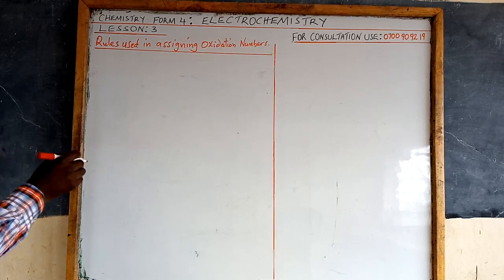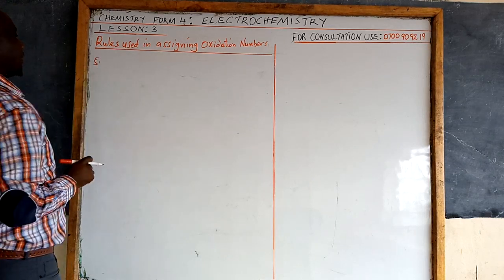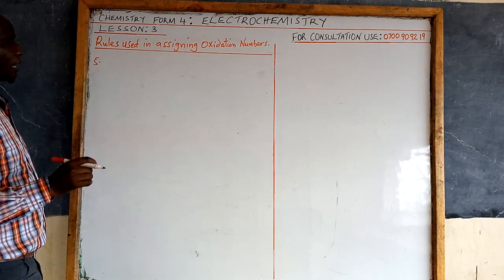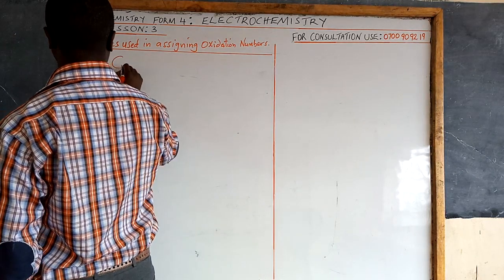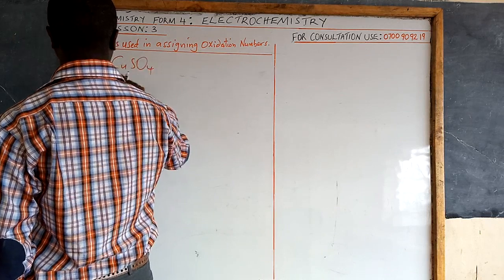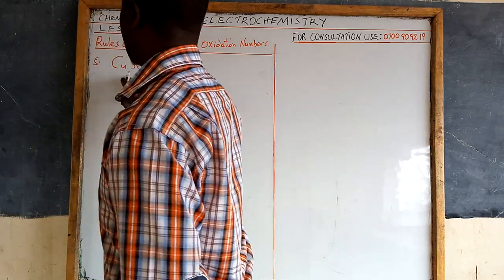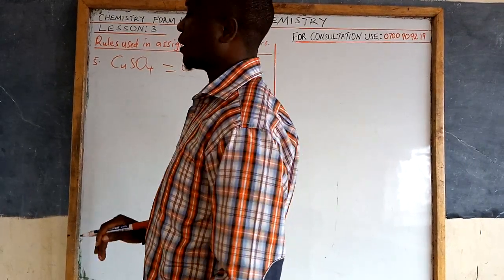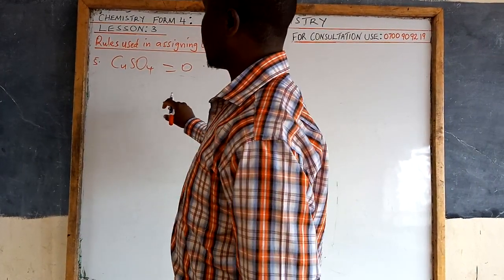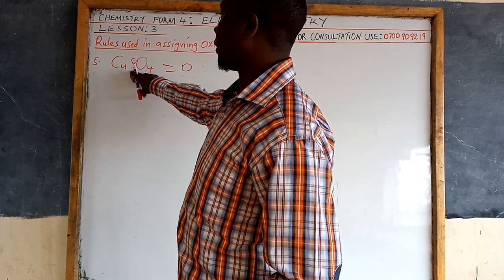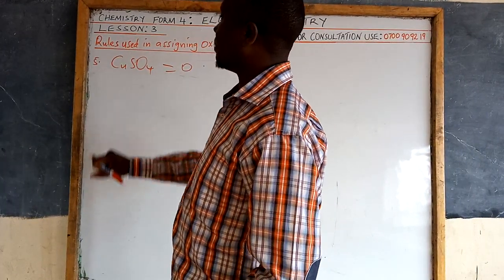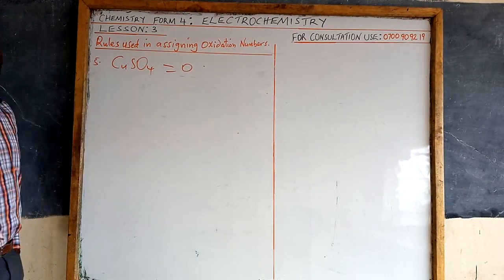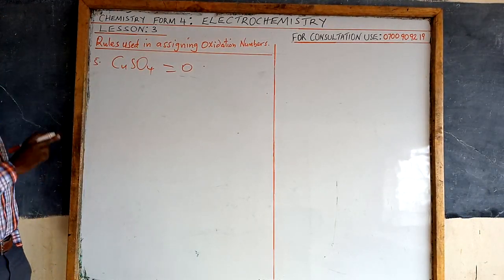Let's consider copper(II) sulfate. Rule number five states that the total oxidation number of all atoms in a compound is zero — so copper plus sulfur plus oxygen equals zero. For example, you could be asked: determine the oxidation number of sulfur in copper(II) sulfate. We don't know the oxidation number of sulfur, so we apply the rule.